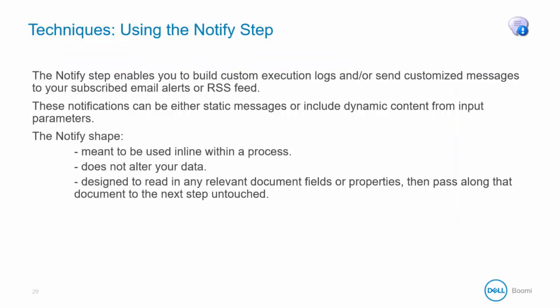As we reviewed previously, the notify step creates one or more notifications at the document level for each process execution. This means that you do not receive a separate notification for each document that passes through a process. If you are using dynamic document level content with a notification — say, within each message you want to capture each business ID and business name that is processed — this data can be aggregated into a single message and then sent to the user's email or RSS feed after the process is completed.